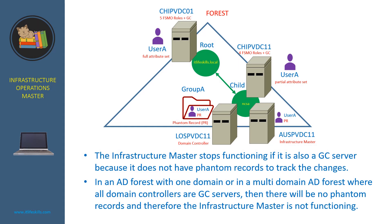Now, you can easily figure out that the Infrastructure Master stops functioning if it is also a global catalog server, because it does not have phantom records to check for changes. Also, in an AD forest with one domain, or in a multi-domain AD forest where all domain controllers are global catalog servers, there will be no phantom records and therefore the Infrastructure Master is not functioning.